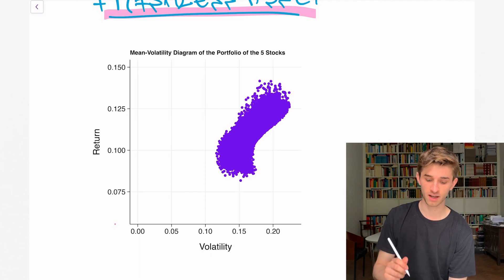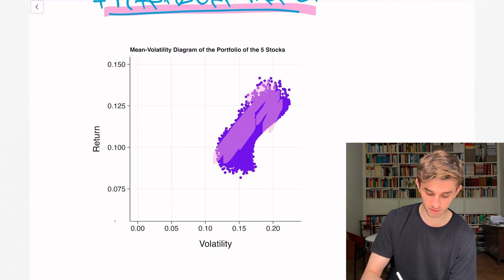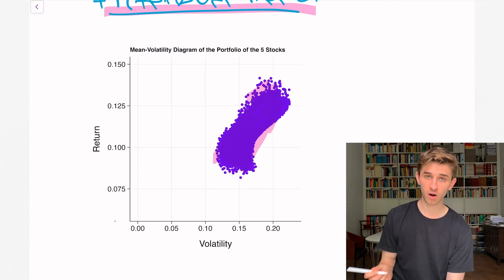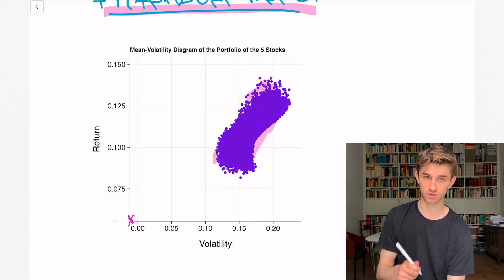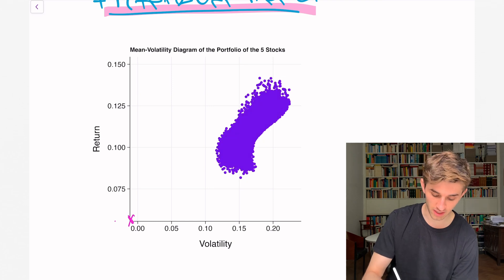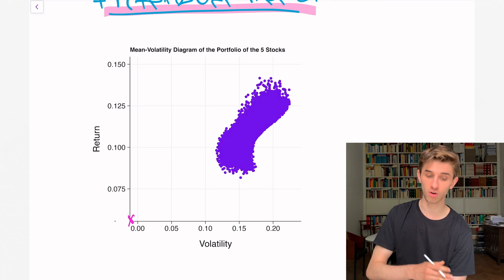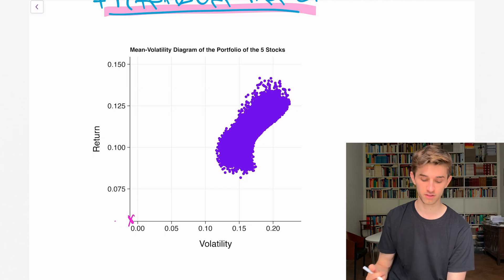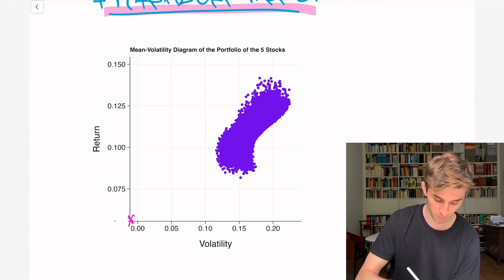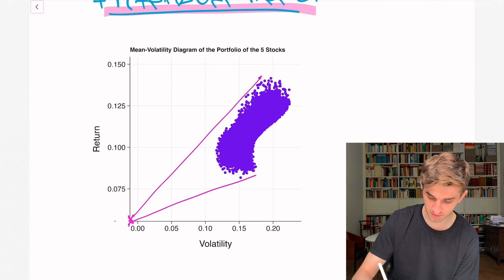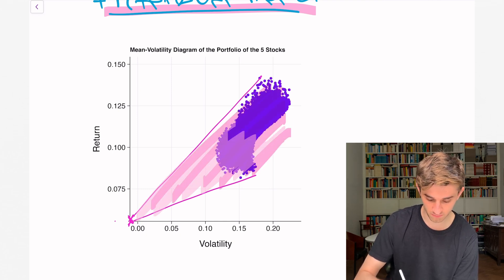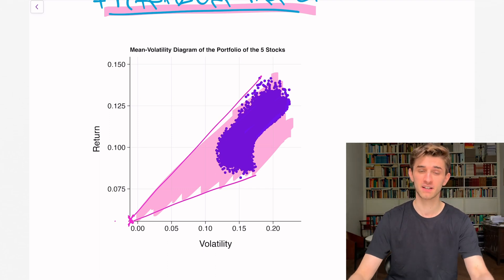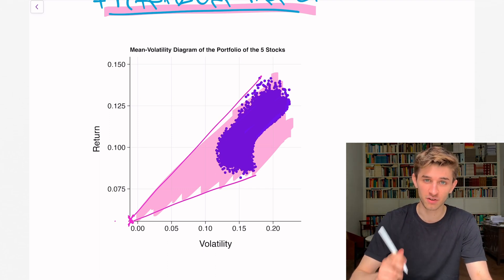When we only have the risky assets, our return volatility combinations that we can achieve are given by the points, this area. But now, as we also have our riskless asset, we can achieve a lot more return volatility combinations. Namely, all combinations where we can draw a line between the riskless bond and the portfolio. So what we can achieve now is about this. These are the positions we can achieve now, and that is a lot more.